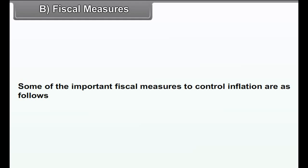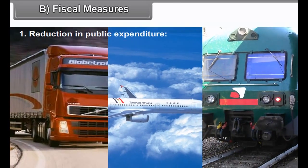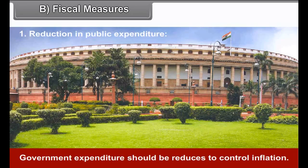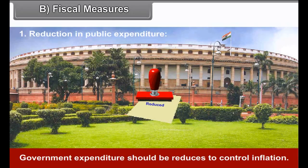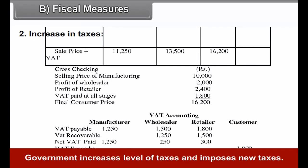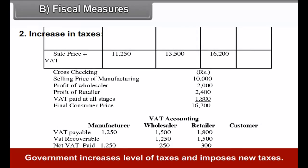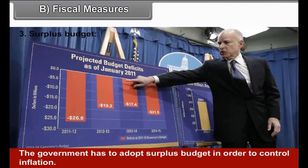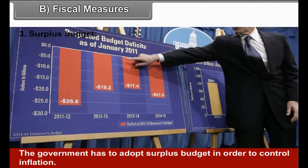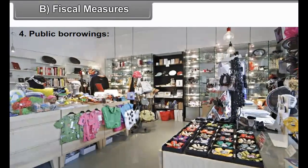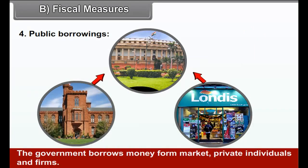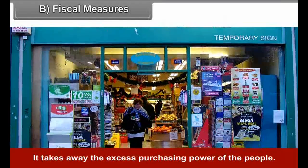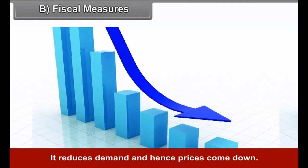B. Fiscal Measures. Some important fiscal measures to control inflation: First, reduction in public expenditure — government expenditure should be reduced to control inflation. Second, increase in taxes — the government increases the level of taxes and imposes new taxes, leading to a fall in consumption expenditure. Third, surplus budget — the government adopts a surplus budget to control inflation. Fourth, public borrowings — the government borrows money from the market, private individuals, and firms, taking away excess purchasing power of the people, reducing demand and hence prices.